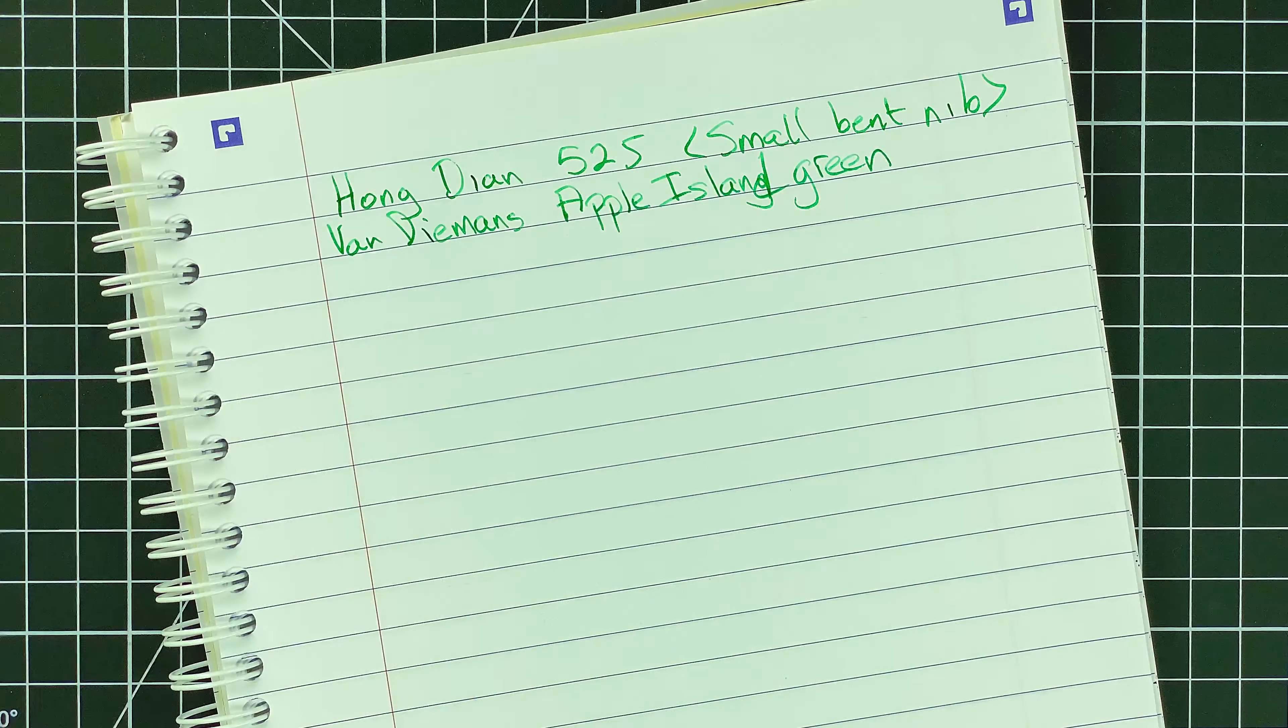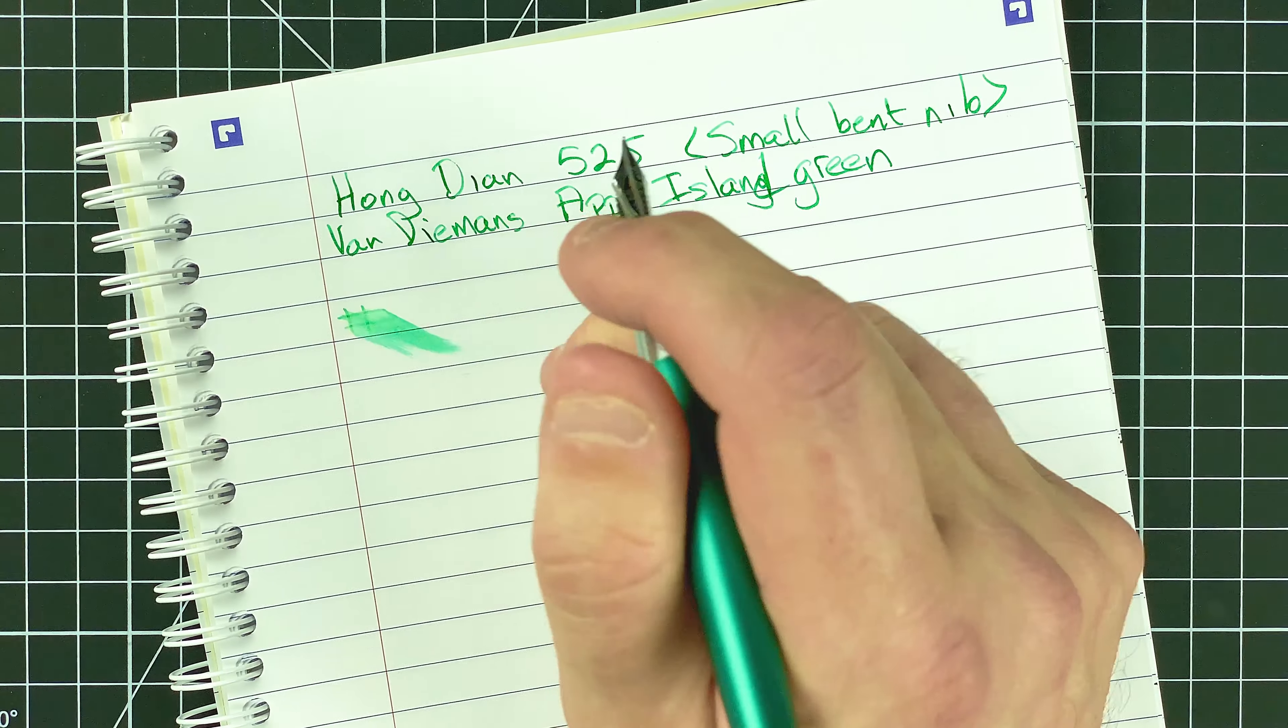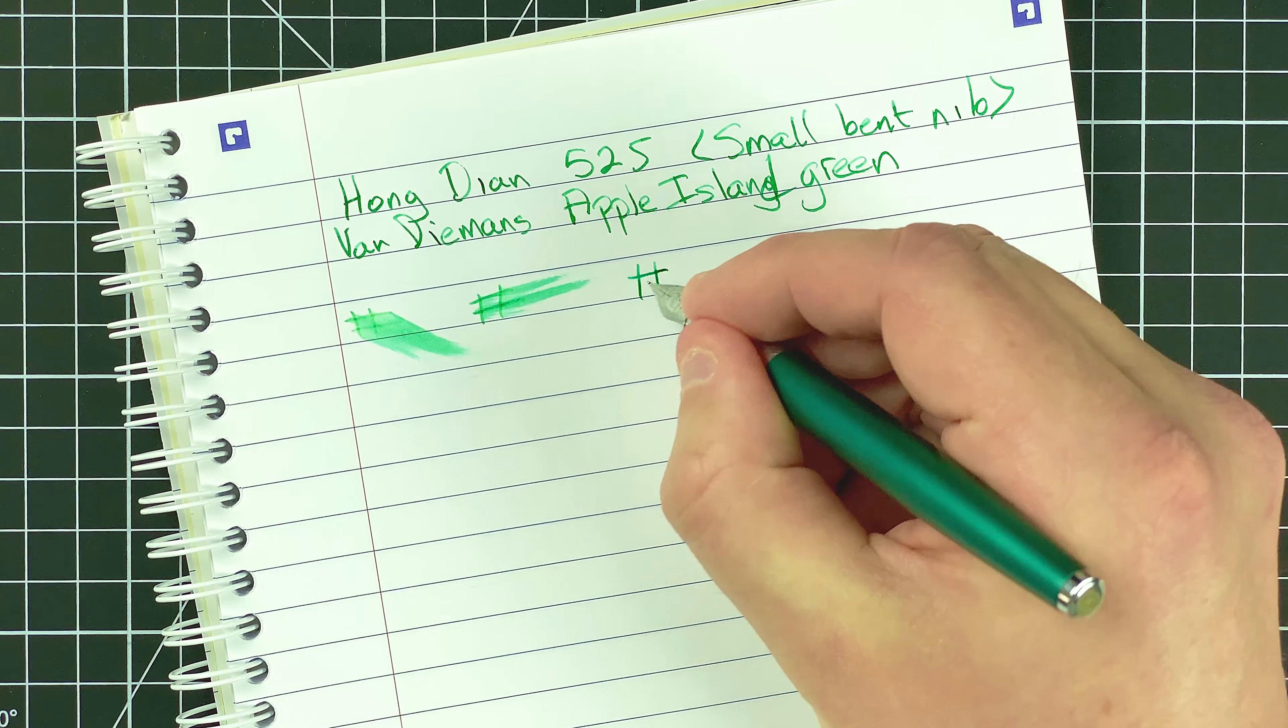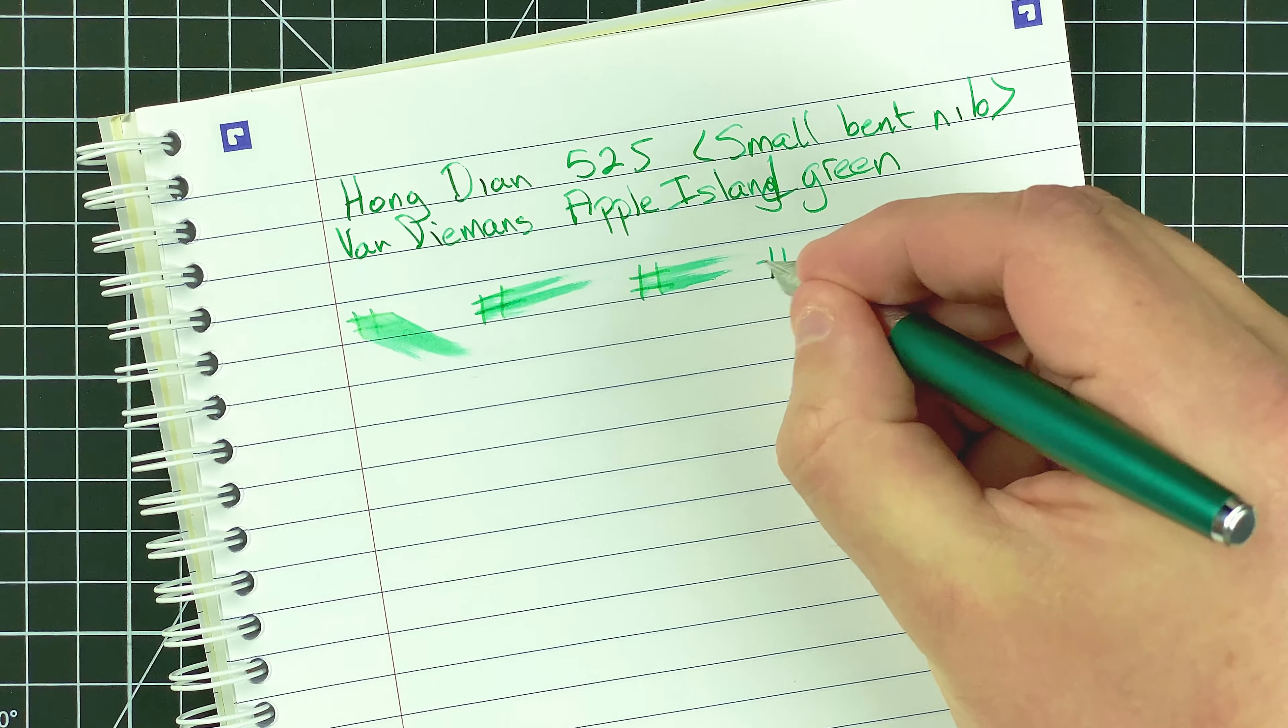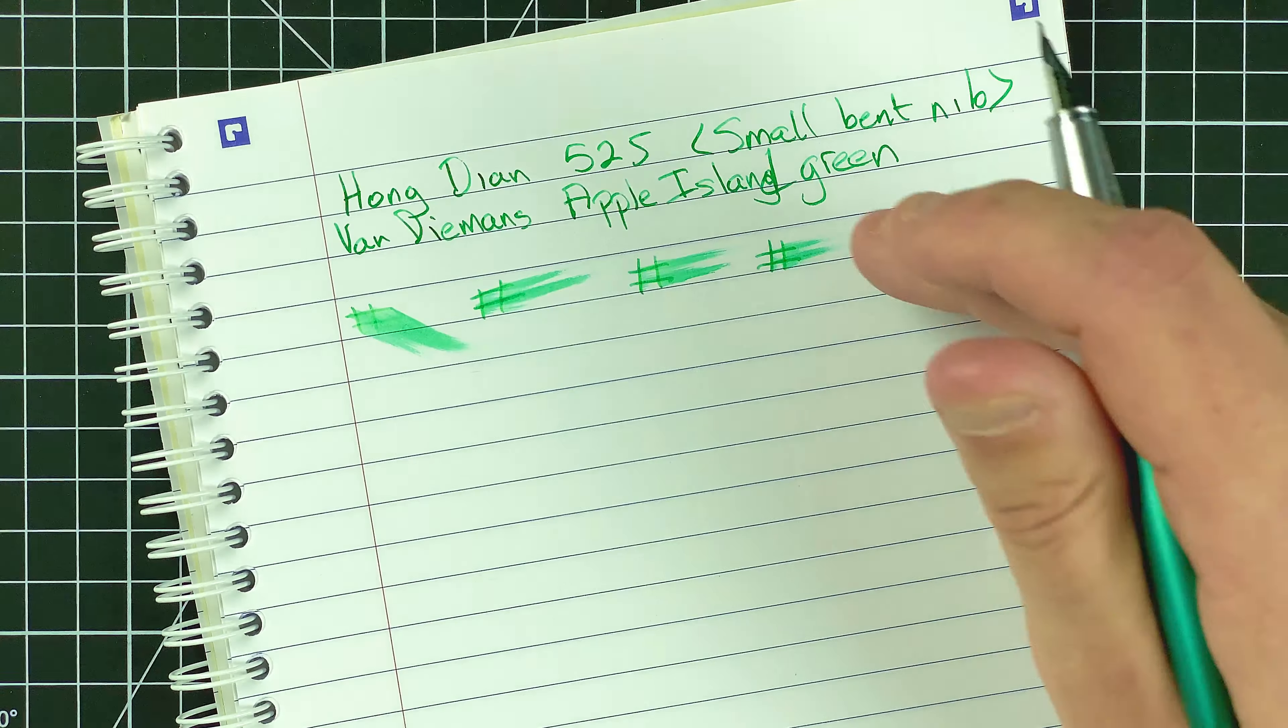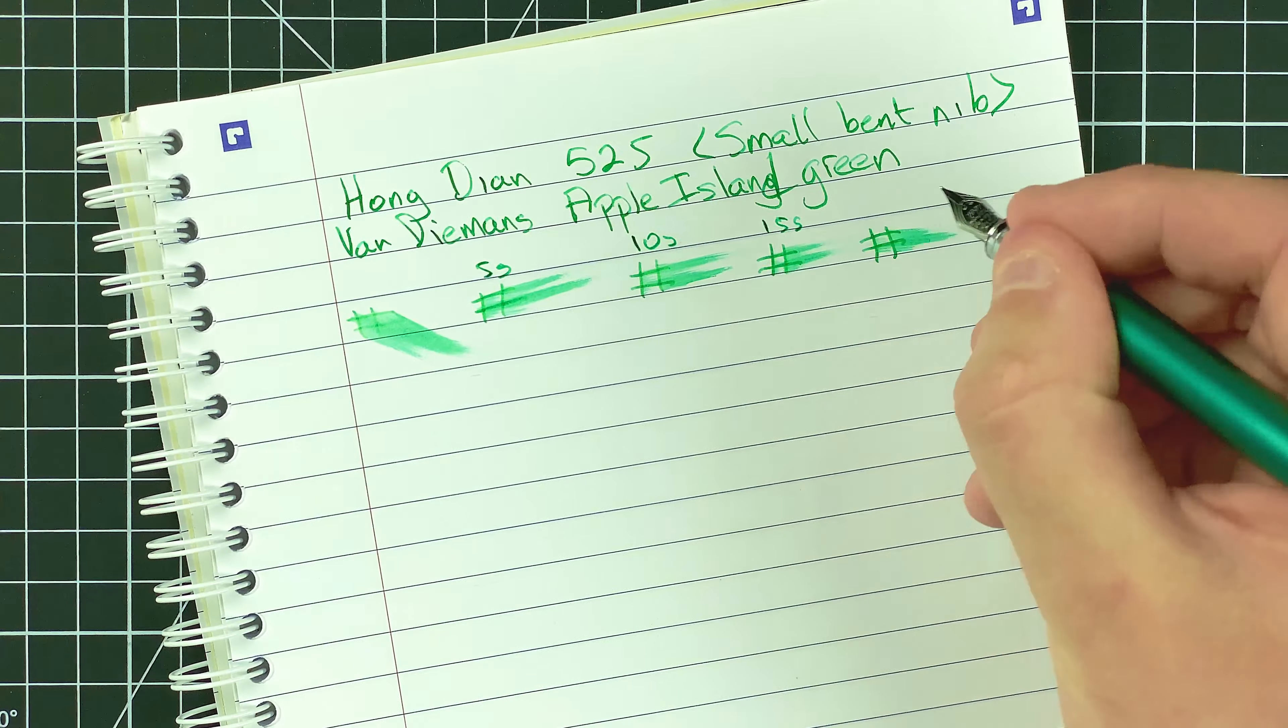The ink I'm using is Van Diemen's and it's Apple Island Green. So I like this ink. It's not too dark, it's not too bright. Let's have a look at the dry times on this. So if I go straight away we've got a really wet ink. After about 5 seconds, again it's still fairly wet. 10 seconds, starting to dry a bit. 15 seconds, still got that wetness there. Now lastly we'll go for 20 seconds, and still we've got that wetness coming through. So a really wet pen with some really wet ink.